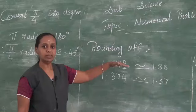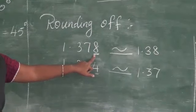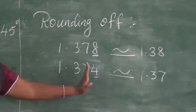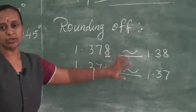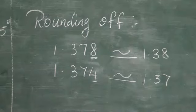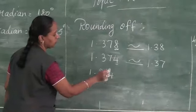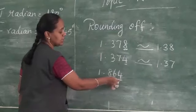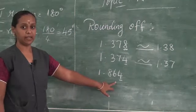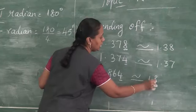If the number is greater than or equal to 5, we add 1 to the nearest preceding digit. If it is less than 5, we neglect that digit and write as-is. The sixth sum from your book: round off 1.864 to the last 2 digits. The last digit is 4, which is less than 5, so we neglect it and write 1.86.